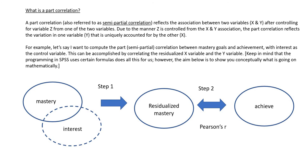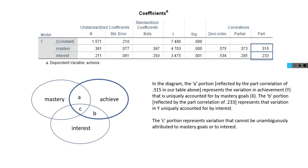The part correlation in our output reflects the association between variables X and Y after controlling for variable Z from only one of the two variables — specifically the independent variable. We residualize the mastery variable for the interest variable, controlling interest out of the variation in mastery, and then correlate that residualized mastery variable with the achievement variable. The Pearson's R between the residualized mastery variable and achievement is called the part correlation, also referred to as the semi-partial correlation.